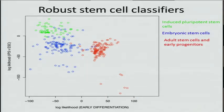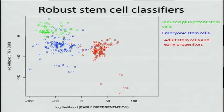The first step is to make sure we have a robust signal. Each dot here represents a microarray run through our classifiers. These are two independent classifiers: one that has learned embryonic stem cells from their early progenitors and adult stem cells, and on the y-axis, we've also learned the difference between embryonic stem cells and induced pluripotent stem cells.